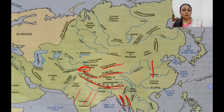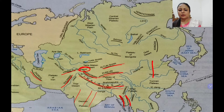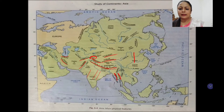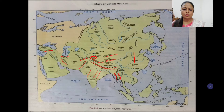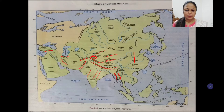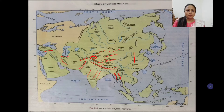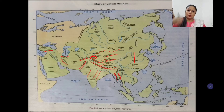Towards the west, the mountains radiating from the Pamir knot include Hindu Kush and Suleiman. Then we have Zagros, Elbrus, and further the Taurus mountains. So Hindu Kush and Suleiman move out towards the west from the Pamir knot, while Karakoram, Himalayas, and Altun Shan move out towards the east. Pamir is a knot from which mountains appear to radiate both eastward and westward.